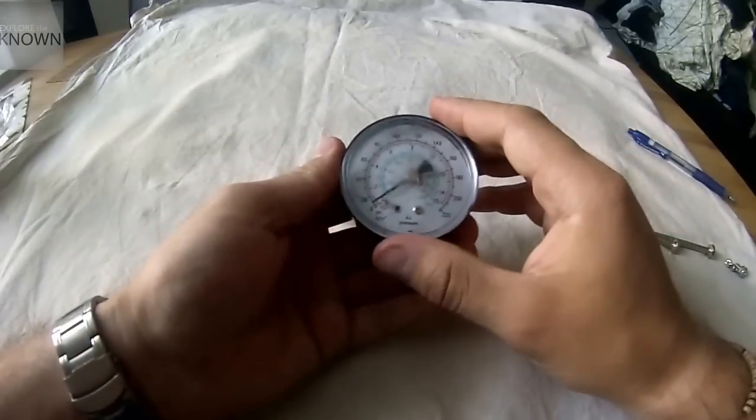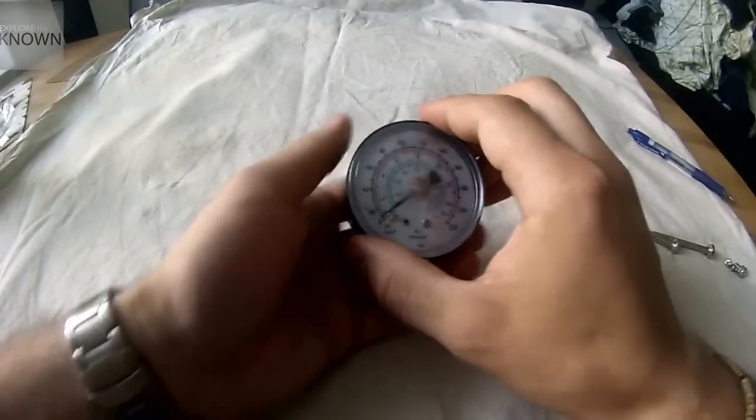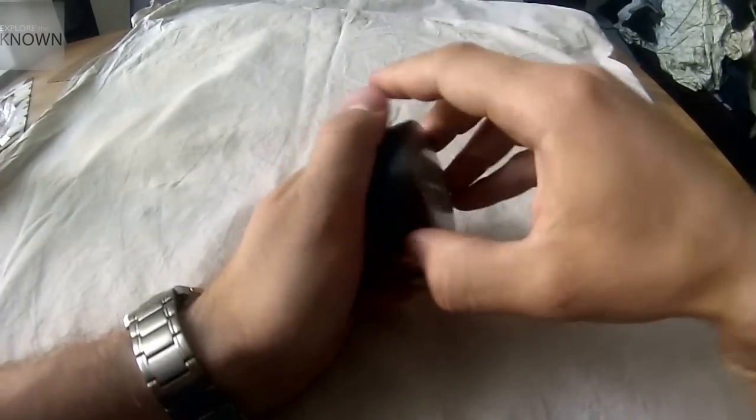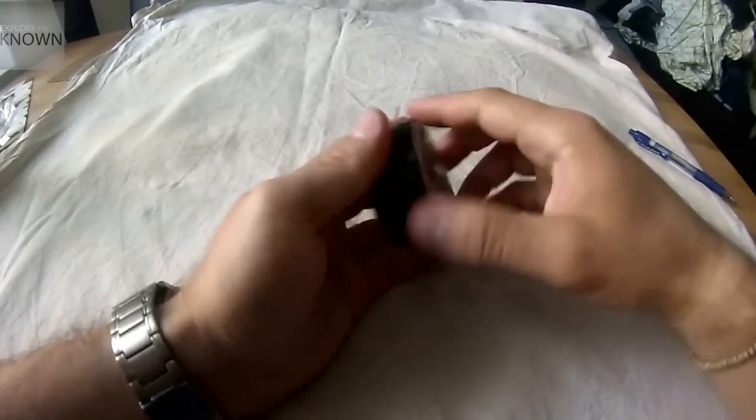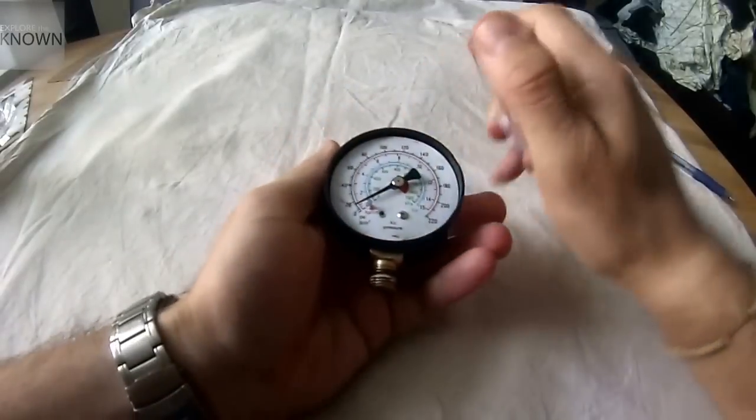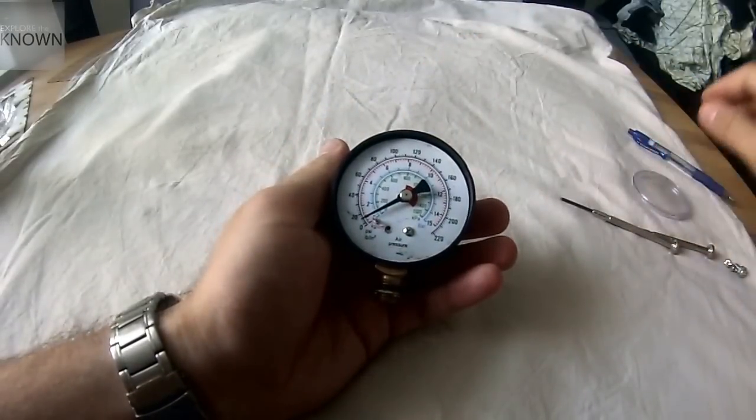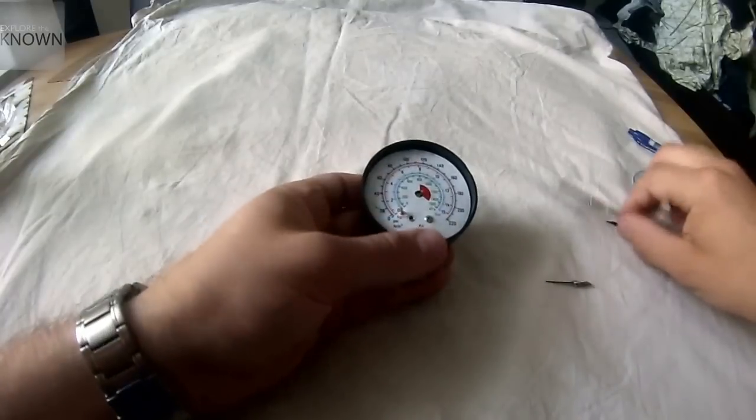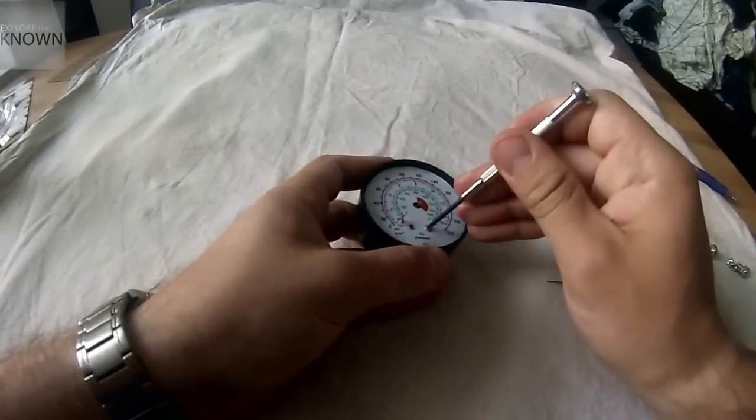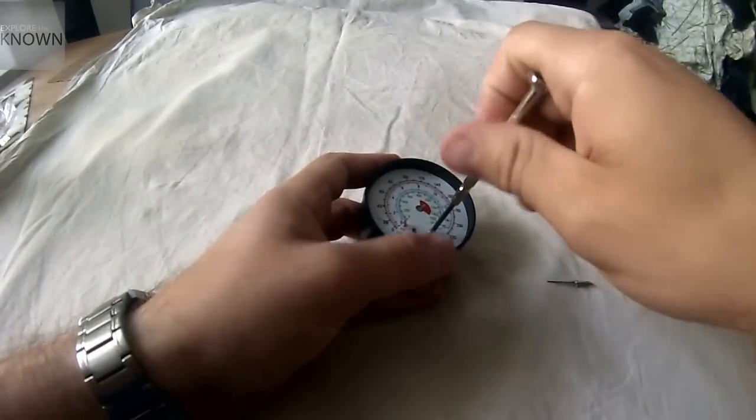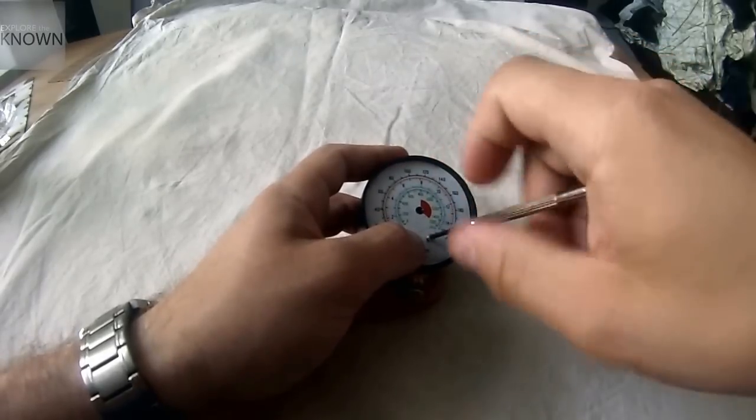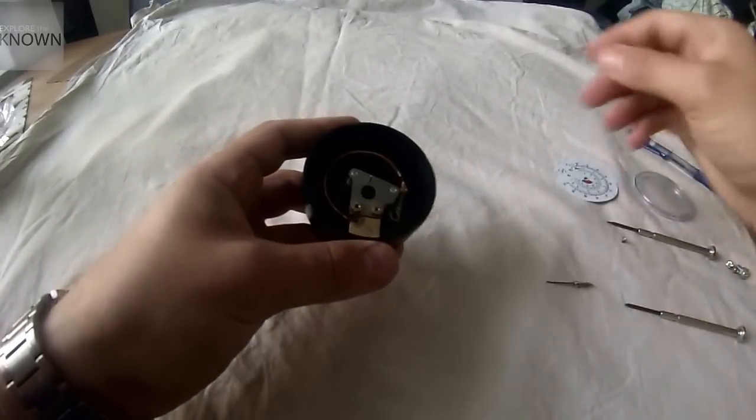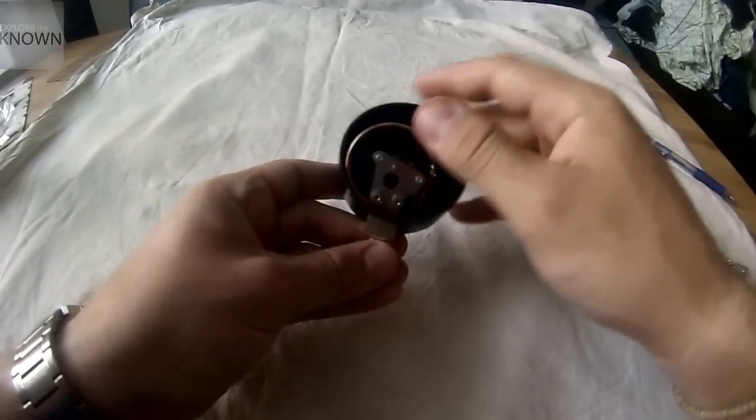So let's have a look and see how it looks inside. Let's remove the glass cover, and let's remove the needle. Unscrew the screw to the faceplate, remove the faceplate, and remove the housing.